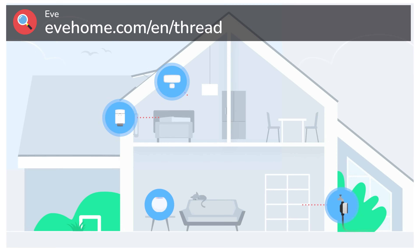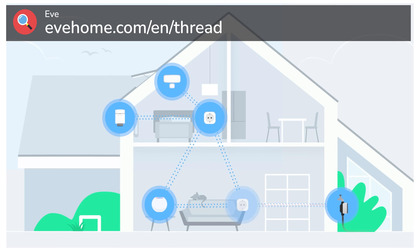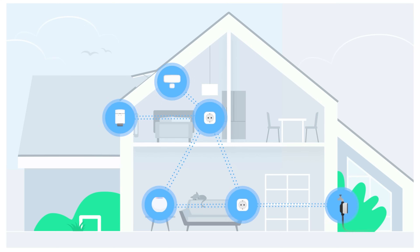Thread operates on the 2.4 gigahertz radio frequency space and has a strong focus on internet of things products, with its low power mesh networking and self-healing capabilities. If you've been following along with previous videos in the series, that sounds pretty familiar to some other technologies we've looked at — but there are some key differences.